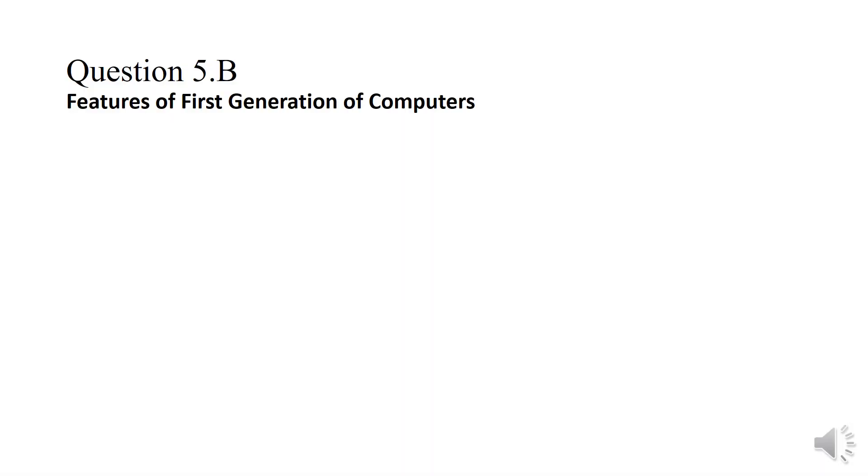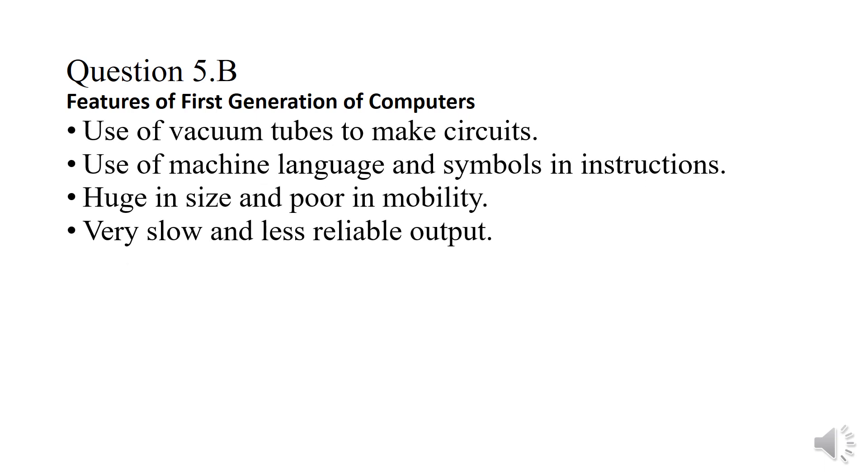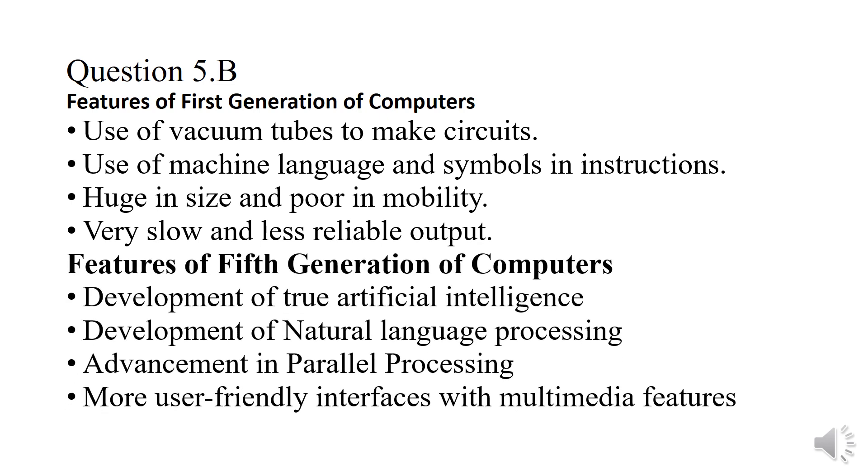Question number five B. Features of the first generation of computers: They used vacuum tubes to make circuits. The programming language was machine language and symbols for instructions. They were huge in size and had poor mobility. They were very slow and had less reliable output. Features included advancement in parallel processing.